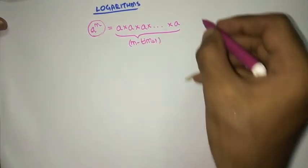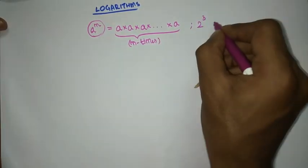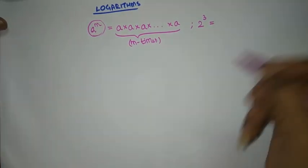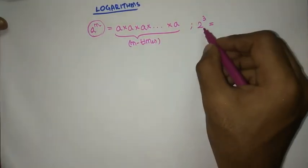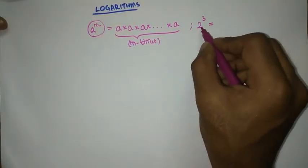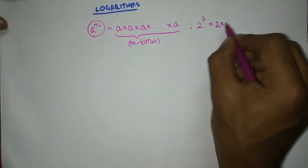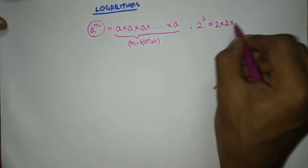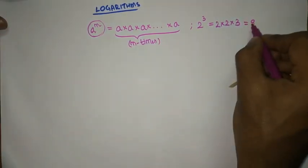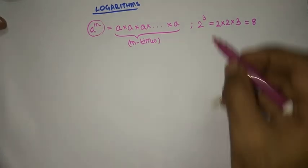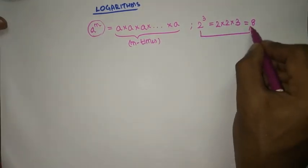For example, if there is a number 2 power 3, it is going to say you need to multiply 2, 3 times, which is equal to 8. So 2 power 3 is equal to 8.